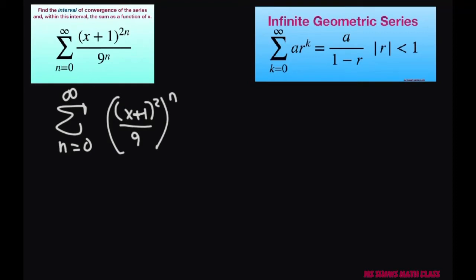So my a is one and this is your r. Since we have that, we want this less than one. So I'm going to take, it converges only when x plus one squared divided by nine is less than one.